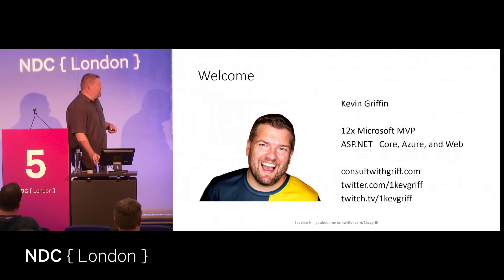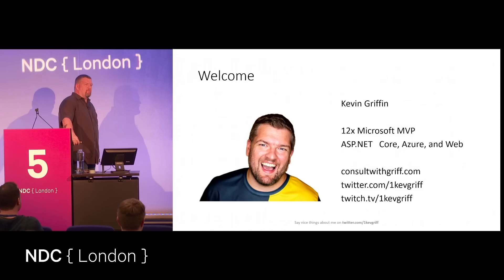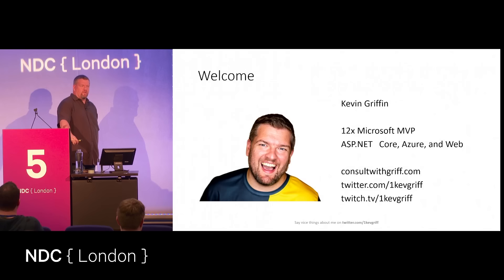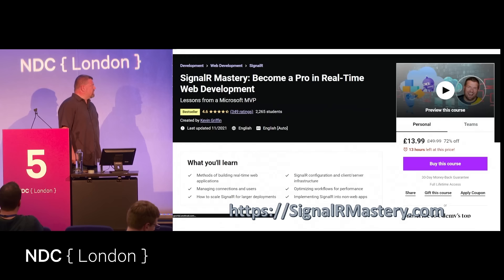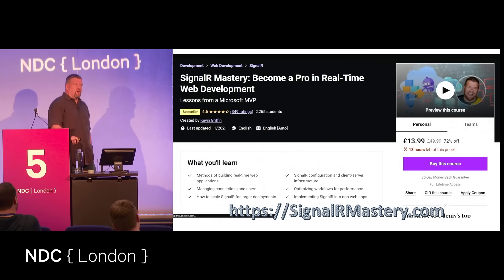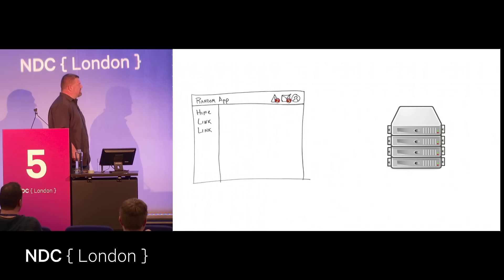Well, you already know there is because you wouldn't be here if there wasn't a better way. I'm Kevin Griffin from the United States, Microsoft MVP, independent consultant. My primary focus in life and career is building web applications on ASP.NET Core and deploying solutions on Microsoft Azure. If you ever like to reach out to me, you can go to my website, consultwithgriff.com, or hit me up on Twitter at 1kevgriff. I also have a best-selling course on Udemy on SignalR. But I'm not going to push my course any more than this.